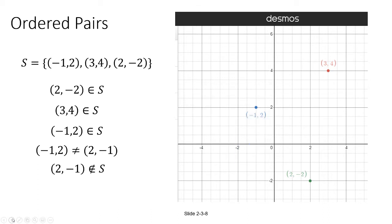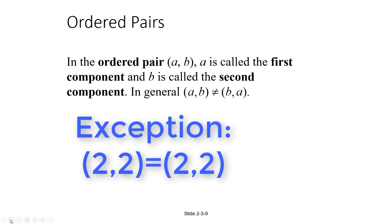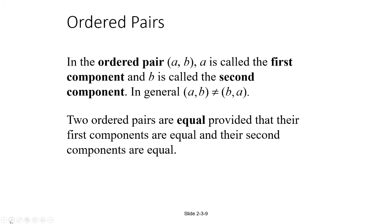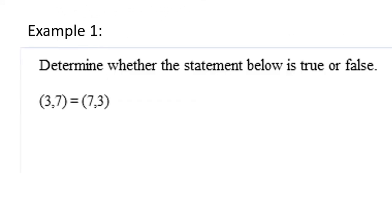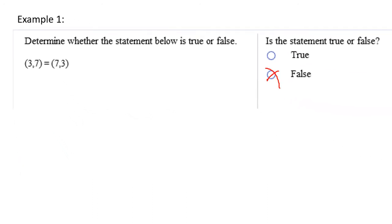So (2, negative 1) is not an element of the set S. In general, the ordered pair (A, B) has a first component A and a second component B, and (A, B) does not generally equal (B, A), unless the first and second components happen to be the same. So we say two ordered pairs are equal provided that their first components are equal and their second components are equal. For example, in your homework, you might be asked whether (3, 7) equals (7, 3) — and you would say this is false because the components have to be in the same order.